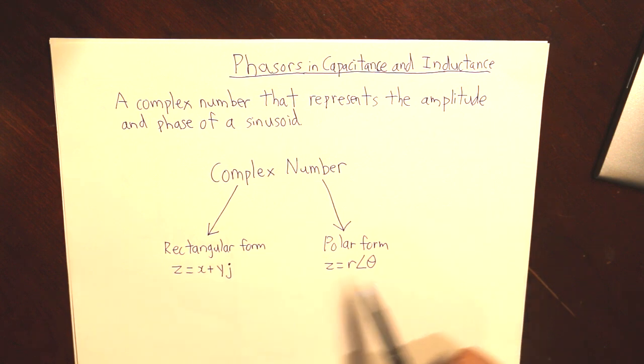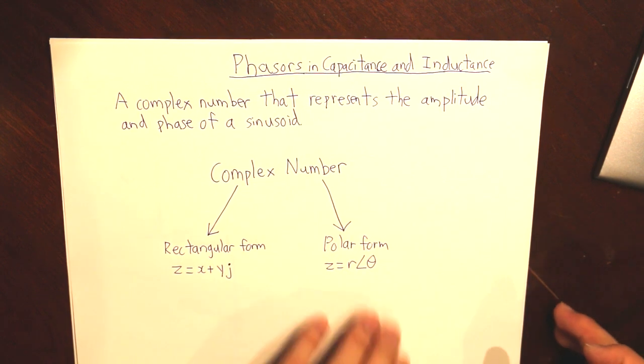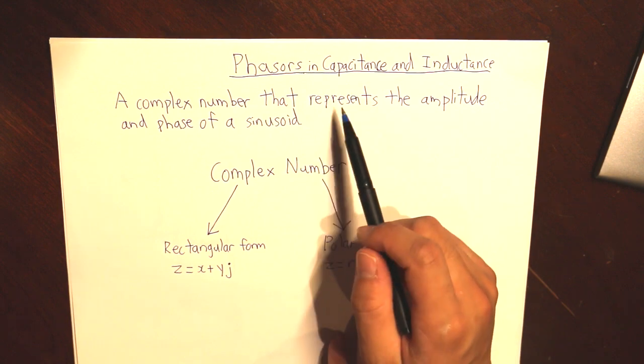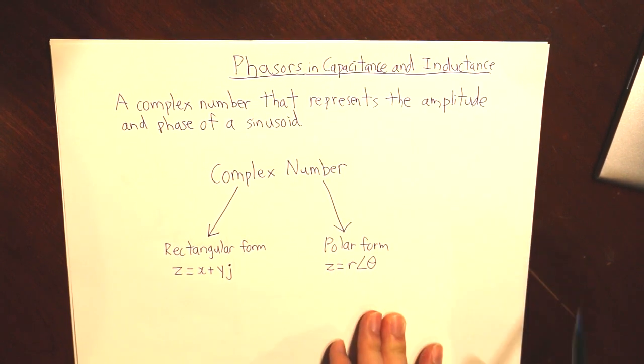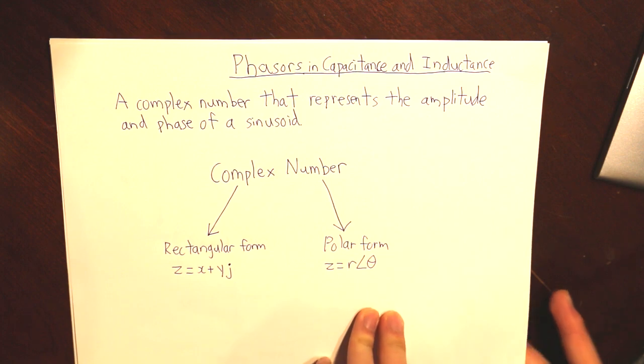So now we understand the basic concept of phasors. Now, how can we relate that to capacitance and inductance? So let's start off with capacitance.